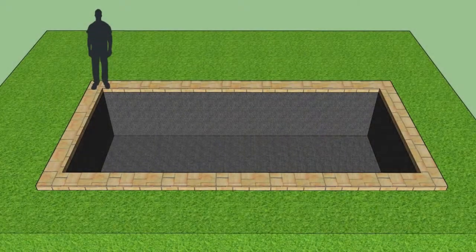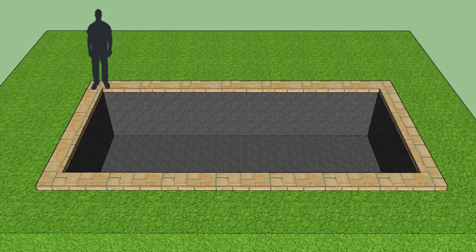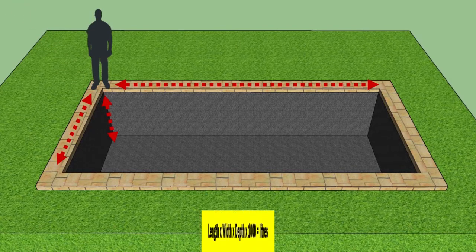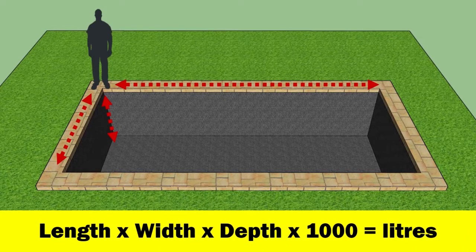Let's start with the easiest pond style to calculate: a basic rectangular or square pond with straight sides, no shelves, and a flat bottom. To calculate the volume, just measure the length, the width, and the depth of your pond, and then multiply them all together. Length times width times depth times 1000 equals the liters.